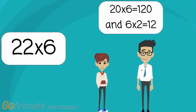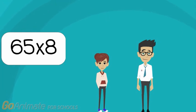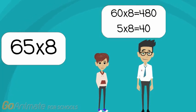See, it's that easy. Let's do another problem. Use the distributive property to do 65 times 8. 60 times 8 equals 480. 5 times 8 equals 40. 480 plus 40 equals 520.